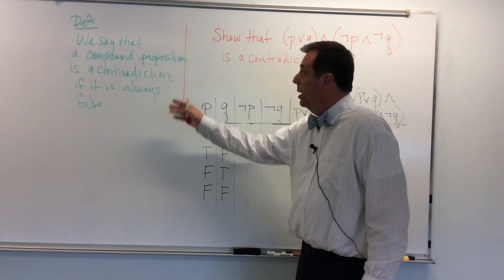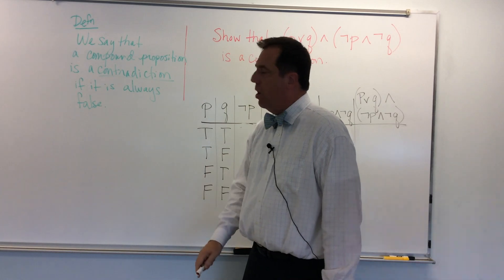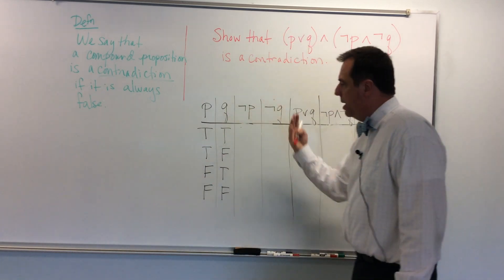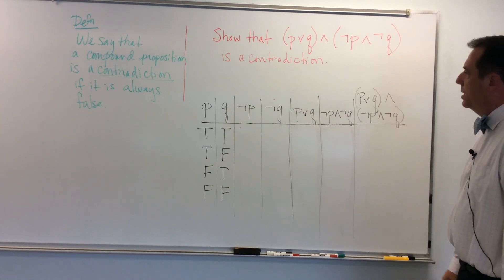Now what is a contradiction? We say that a compound proposition is a contradiction if it's always false. What better way to find out whether something's always false than with a truth table. I have one set up here for us.